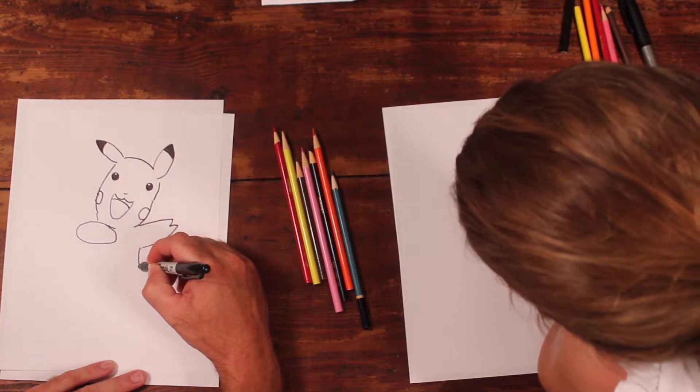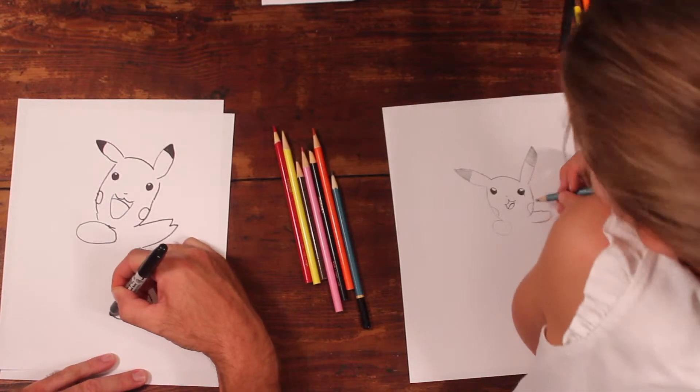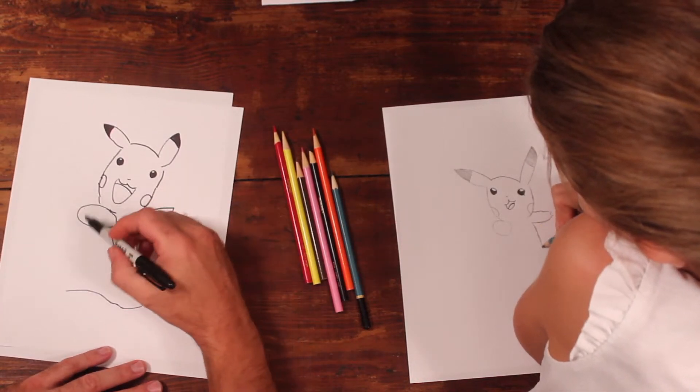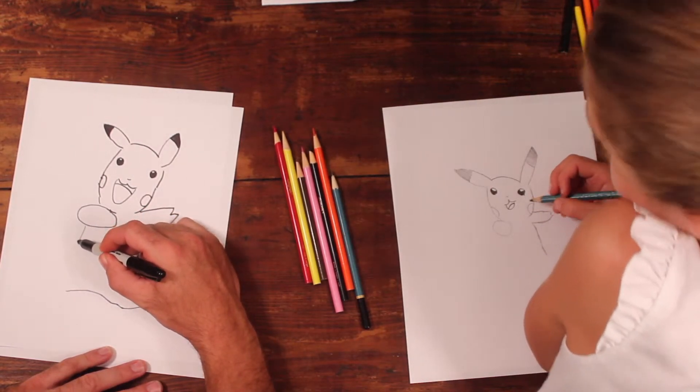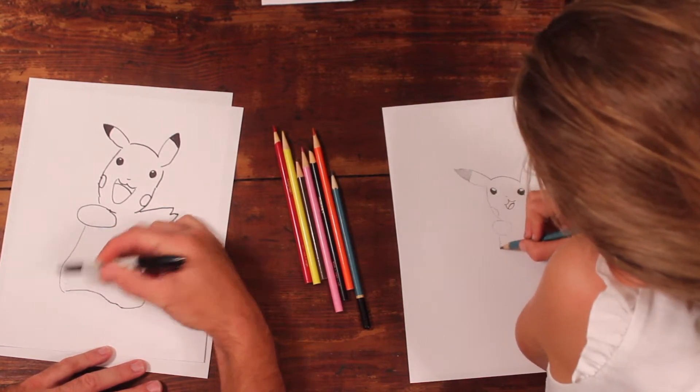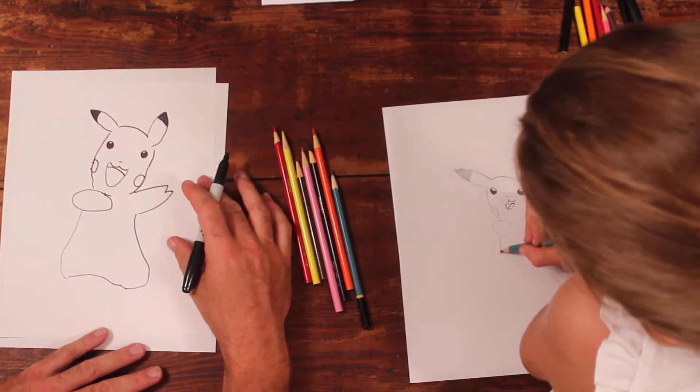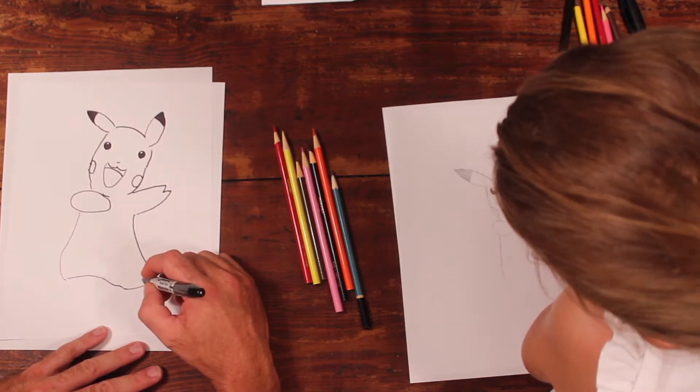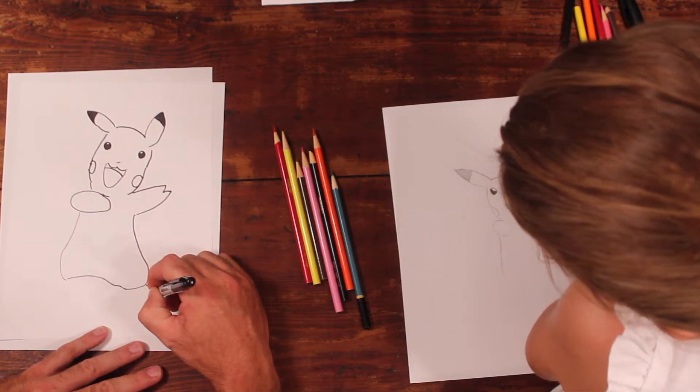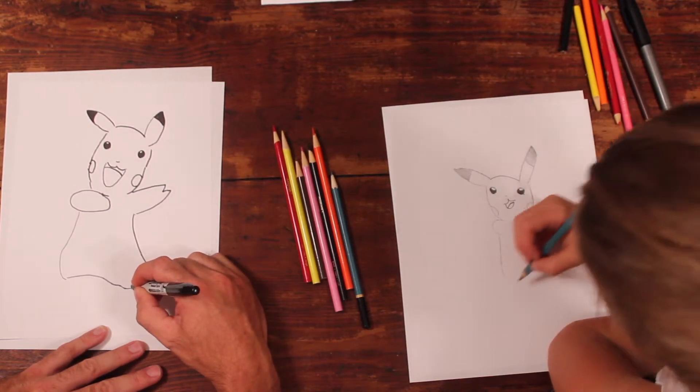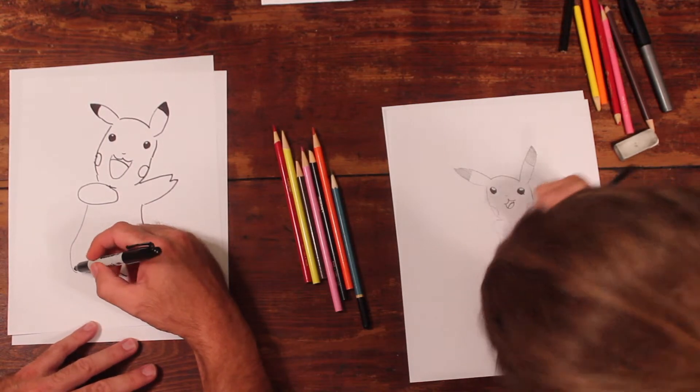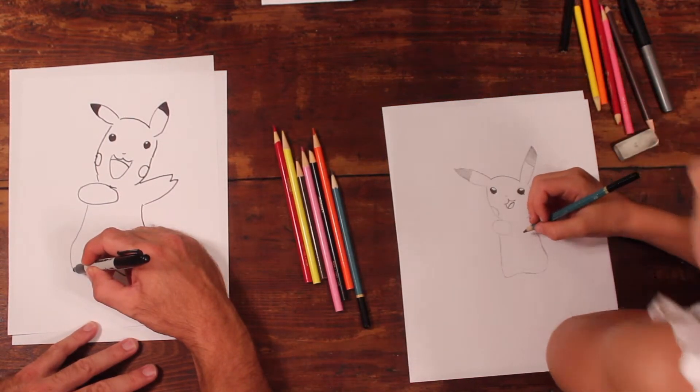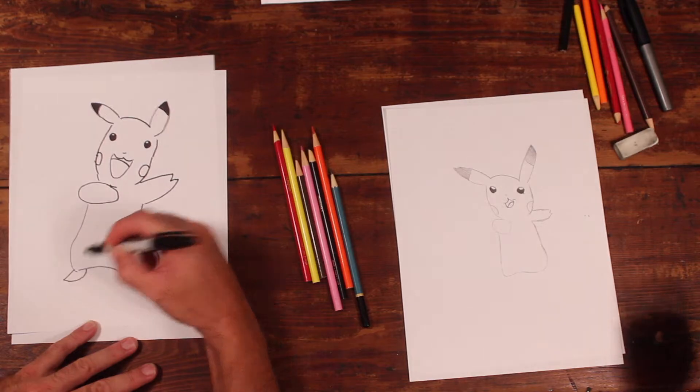All right, and then Pikachu's body kind of comes down into the lower part and just over to the other side, starting from about the same point on the other side, and draw the rest of his body and just bring it out just like that. Okay.